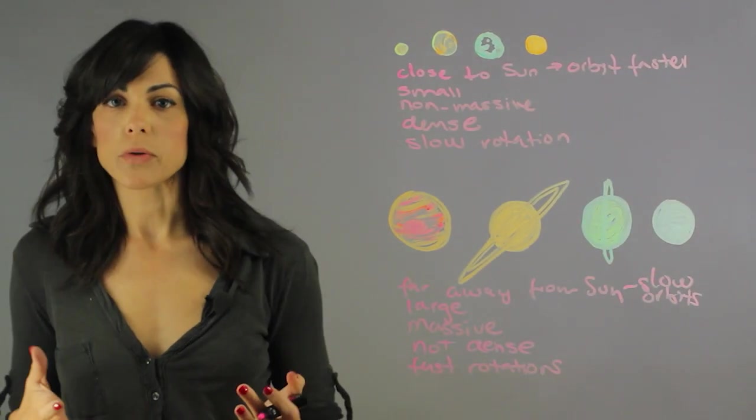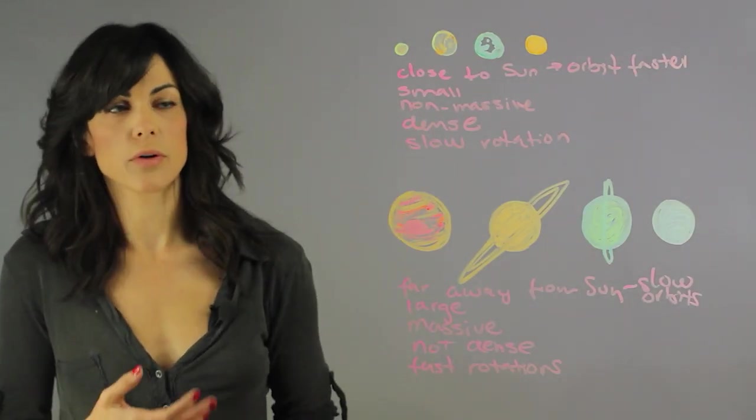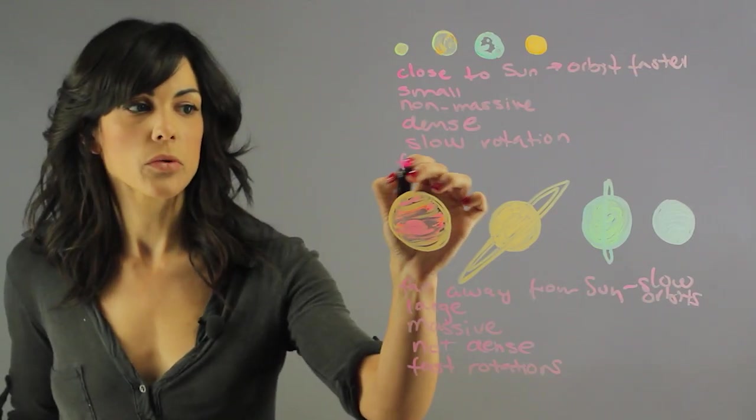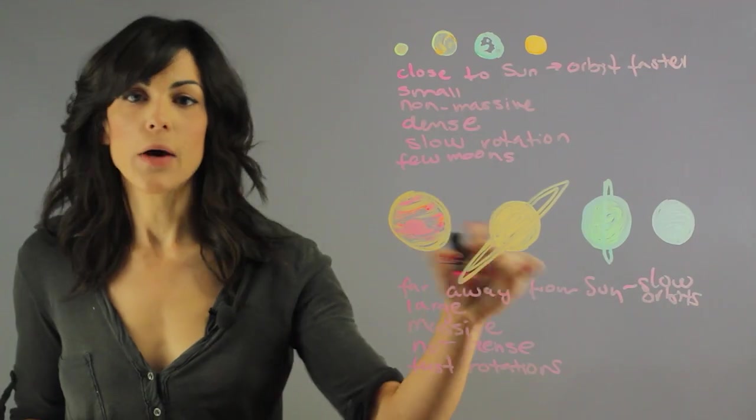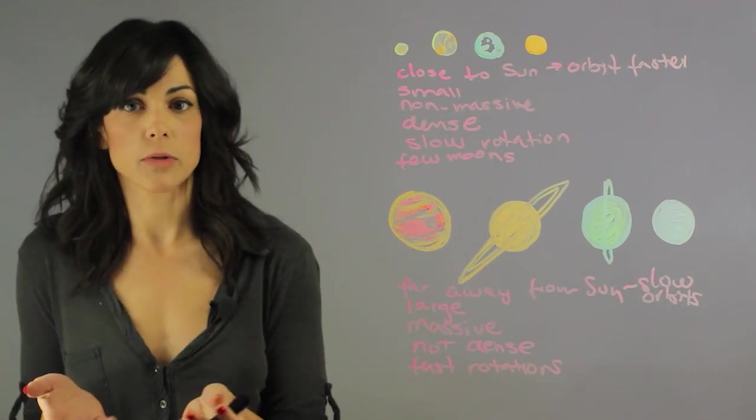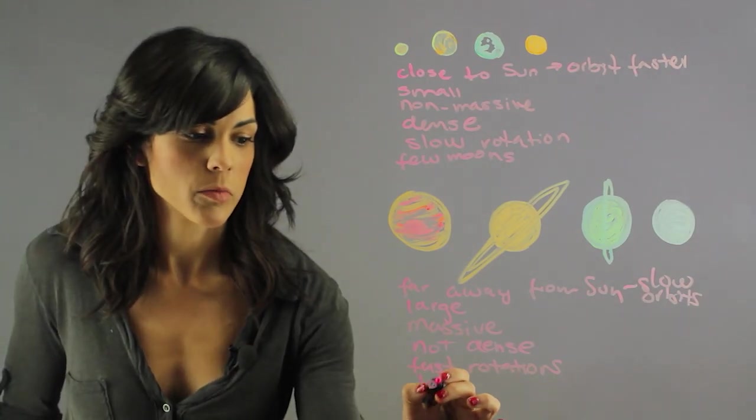Now let's talk about moons. Generally, the inner planets have very few moons. Earth has one and so forth. The outer planets have many, many moons. Like Saturn, I think the count is about 70 moons.